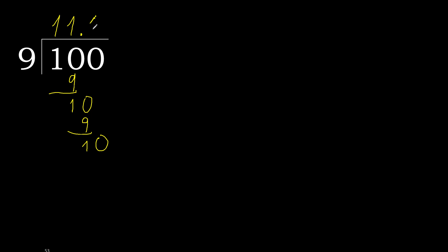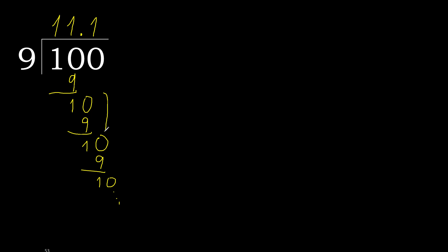9 multiplied by 1 is 9, subtract — complete. This pattern repeats. Therefore here: 1, repeat. 100 divided by 9 is the result here, and after the decimal point it repeats.